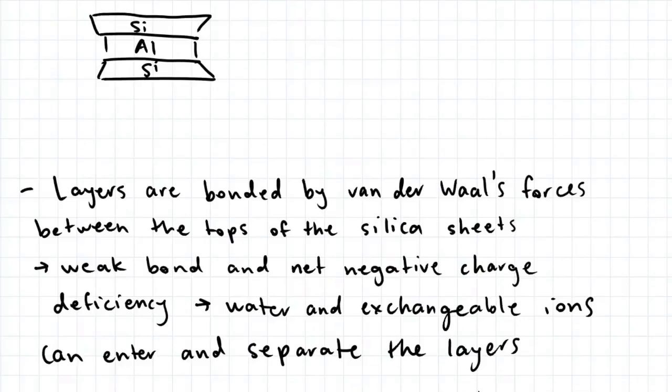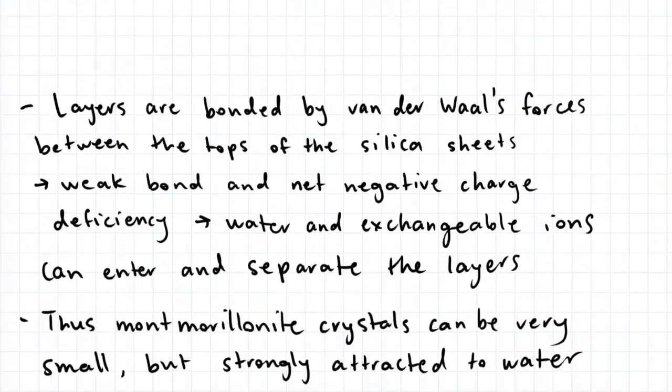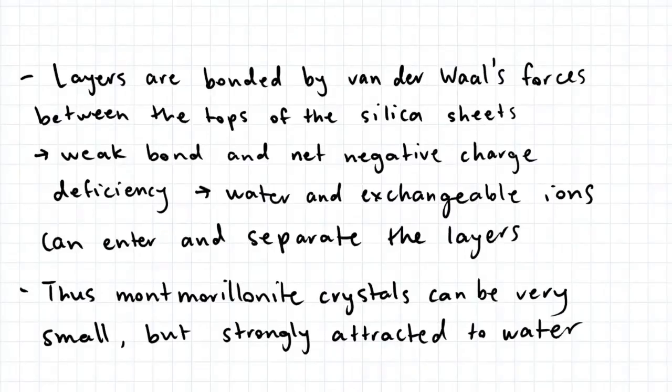The layers are bonded by van der Waals forces between the tops of the silica sheets. This is a weak bond and results in a net negative charge deficiency. As a result, water and exchangeable ions can enter and separate the layers.